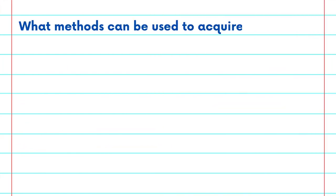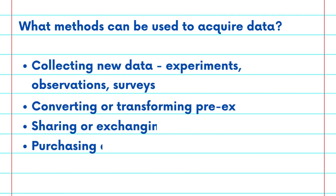There are a variety of methods to acquire data. These methods include collecting new data, whether that be from your own experiments, observations, or a survey you've created; converting or transforming pre-existing data; sharing or exchanging data; or even purchasing data.